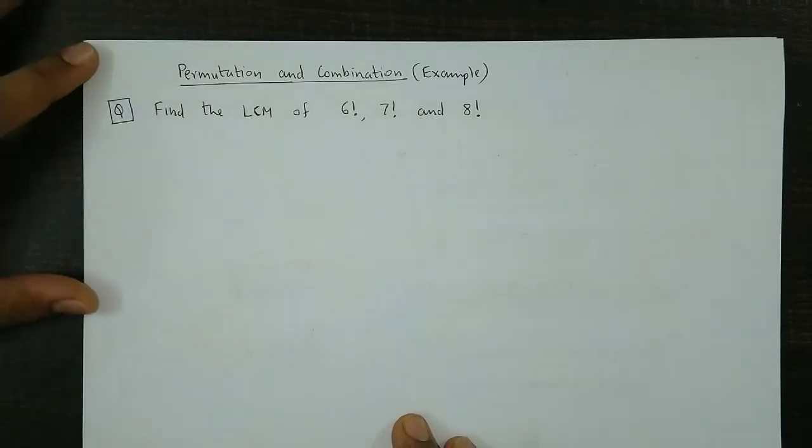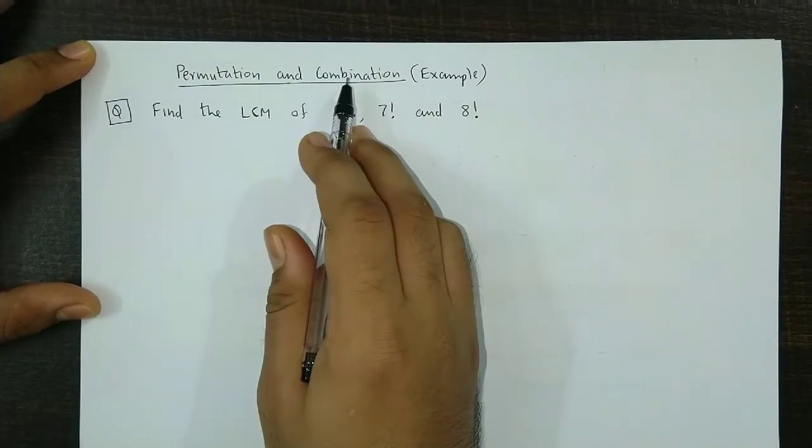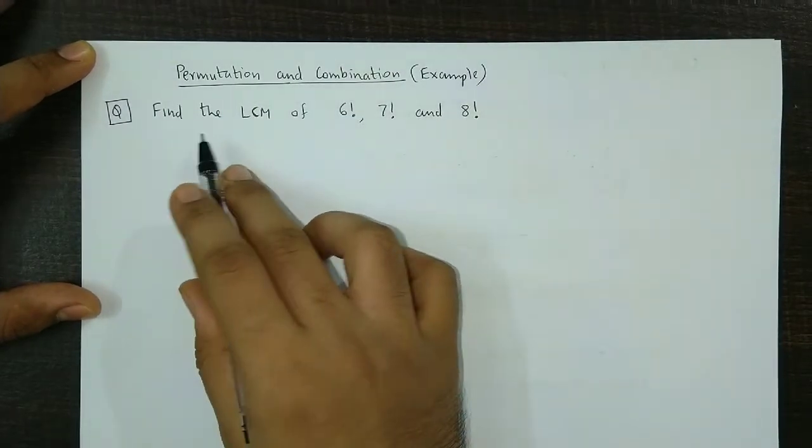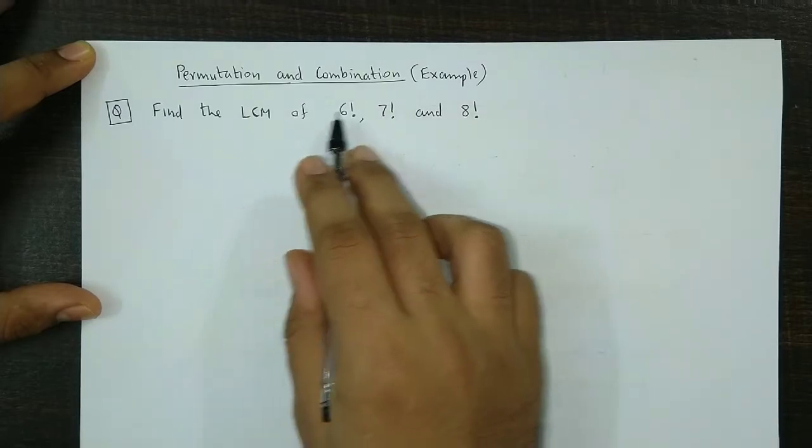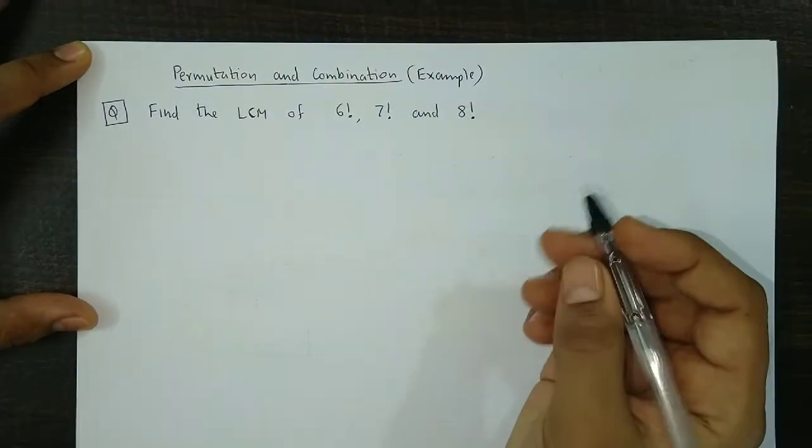Hello and welcome back. We now take an example from the topic permutation and combination. The question is: find the LCM of 6 factorial, 7 factorial, and 8 factorial.